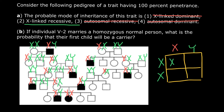Looking at the Punnett square: a normal X chromosome inherited from the mother's side paired with the defective X inherited from the father's side gives a carrier daughter. A normal Y inherited from the father gives an unaffected son. So 50% of the children would be carriers — or 100% of the girls. Because there is a 50% probability the first child is a boy and a 50% chance the first child is a girl, the probability that their first child will be a carrier is 50%.